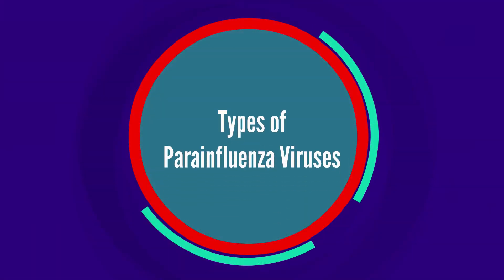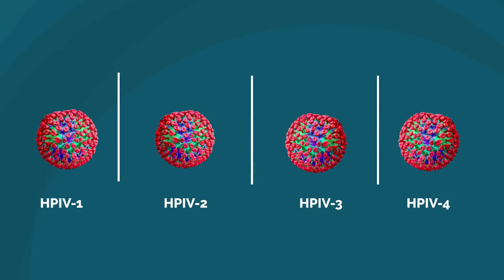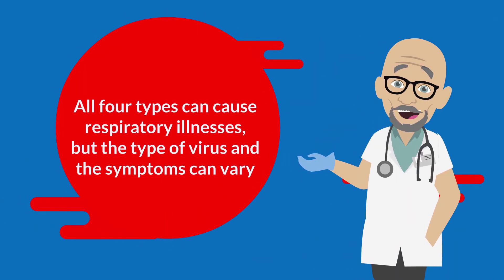There are four types of parainfluenza viruses, commonly known as HPIV1, HPIV2, HPIV3, and HPIV4. All four types can cause respiratory illnesses, but the type of virus and the symptoms can vary.